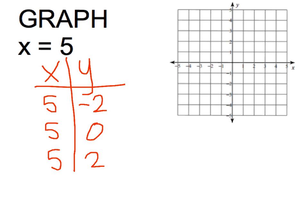So 5, negative 2. So as a reminder, my first ordered pair goes left or right, and my first number in the ordered pair goes up or down. So 5, negative 2, I go over 5 and down 2. There's my point. 5, 0, I go over 5 and I stay there. And 5, 2 means I go over 5 or right 5 and up 2.